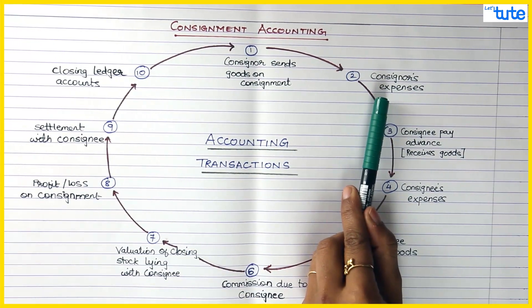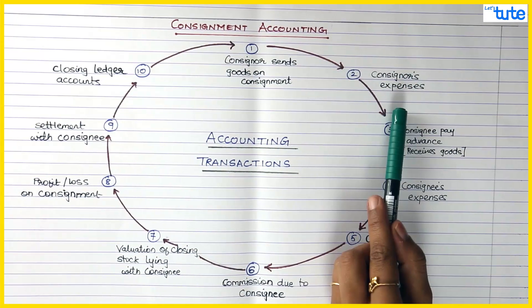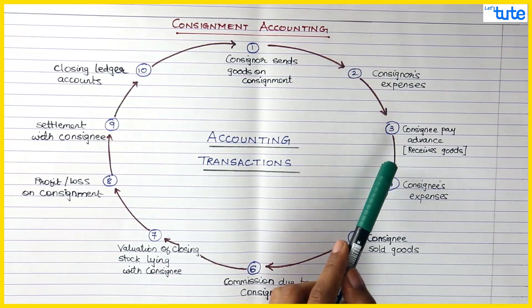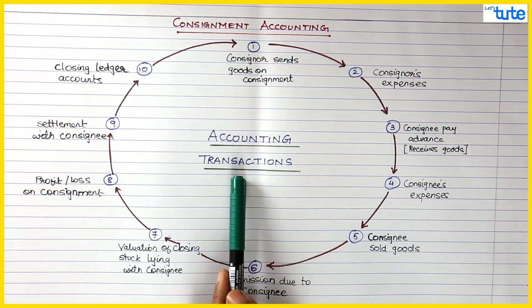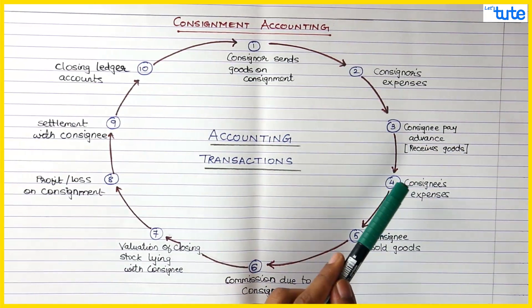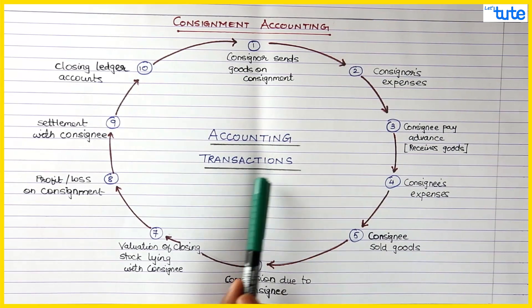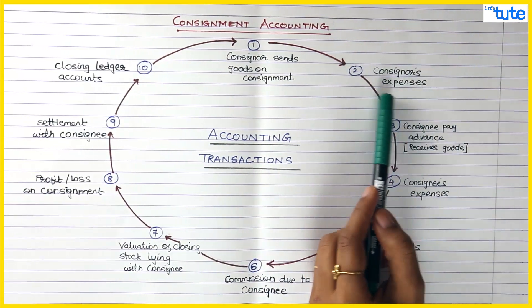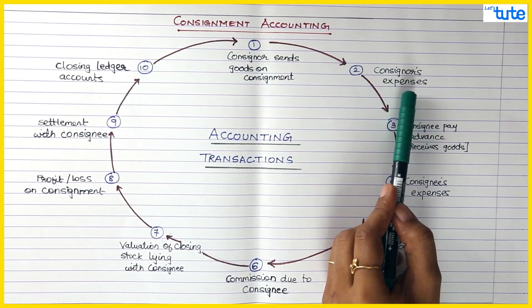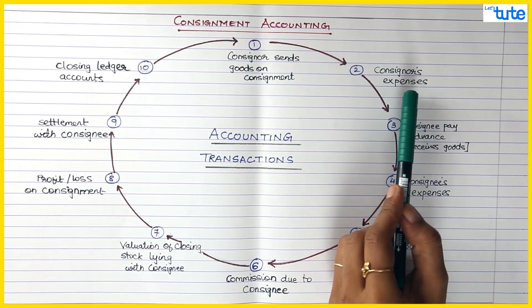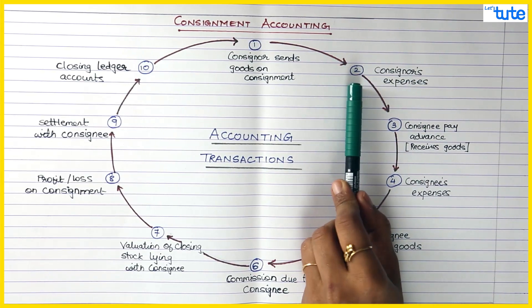For sending those goods, the consigner will have to incur some expenses like loading charges, freight, transportation charges, travel insurance, or stock insurance. All those expenses incurred by the consigner will be accounted for — that is your step number two.